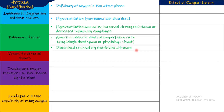Then we have diminished respiratory membrane. Pulmonary diseases are of three types: hypoventilation due to airway resistance, hypoventilation due to decreased pulmonary compliance, abnormal ventilation-perfusion ratio, or a problem with the respiratory membrane. Coming to venous to arterial shunts — in a right-to-left cardiac shunt, blood enters the right side of the heart, goes from the right atrium to right ventricle, and should go to the lungs. But if instead it goes directly to the left side of the heart without passing through the lungs, it remains deoxygenated. This is a right-to-left shunt and results in hypoxia.